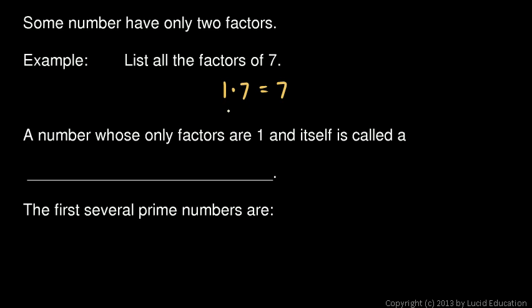There are no other numbers that you can multiply. As long as you're dealing with positive integers, there are no other numbers you can multiply to give you 7. So to list the numbers, it would just be 1 and 7, and that's all. Only two factors.